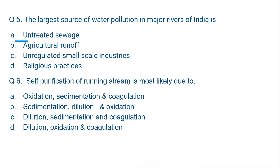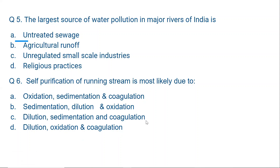Question 6: Self-purification of a running stream is most likely due to: A. Oxidation, B. Sedimentation and coagulation, C. Dilution, sedimentation and coagulation, D. Dilution, oxidation and coagulation. The correct answer is C — dilution, sedimentation and coagulation.